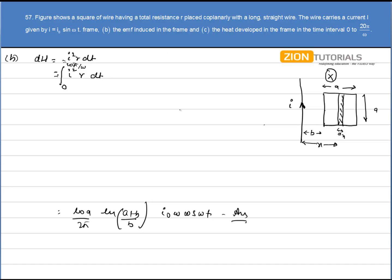Now we calculate the emf in earlier part that is in part A. So I can calculate the current as e by r. So that will be mu not into A into i not cos omega t divided by 2 pi r, natural log of A plus B by B. This is the current flowing through.